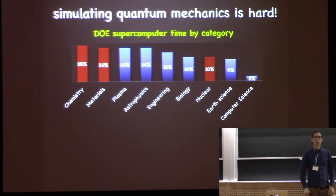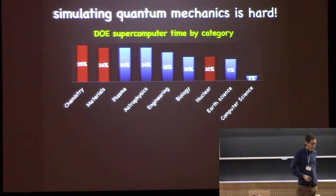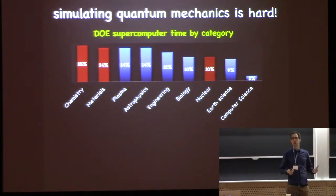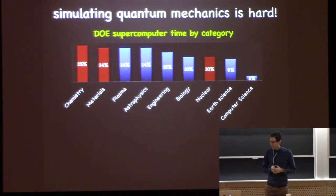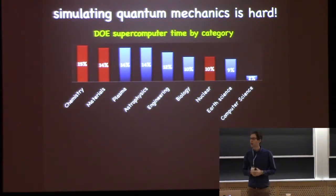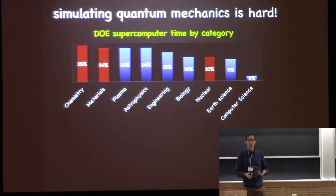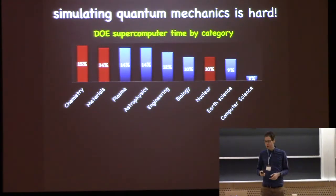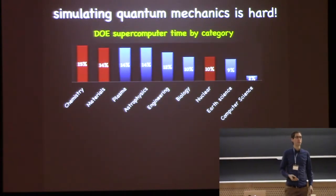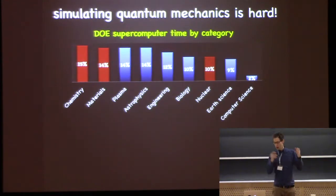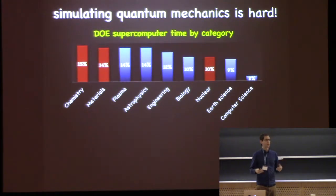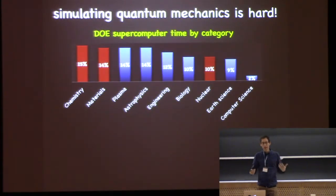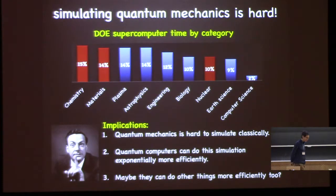Quantum mechanics is a theory that people kept not wanting to believe, but the evidence hit us repeatedly until we accepted it. One annoying feature is that it's exponentially hard to simulate quantum systems. If you have n quantum systems, the difficulty of simulating them doesn't just grow with n — it grows exponentially with n. Looking at how DOE supercomputer time is used, these red categories are the ones where difficulty basically comes from quantum mechanics, and if anything that understates it — the nuclear category might be simulating one proton, whereas earth science might be simulating the entire earth's crust or weather patterns.